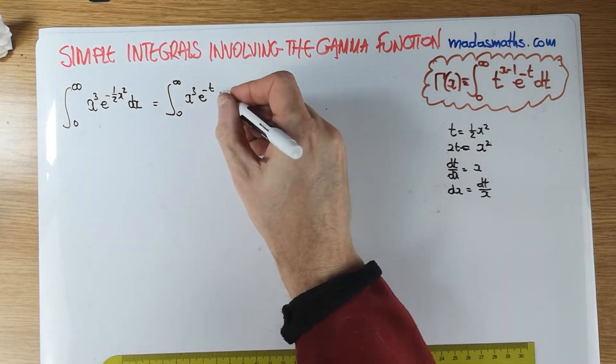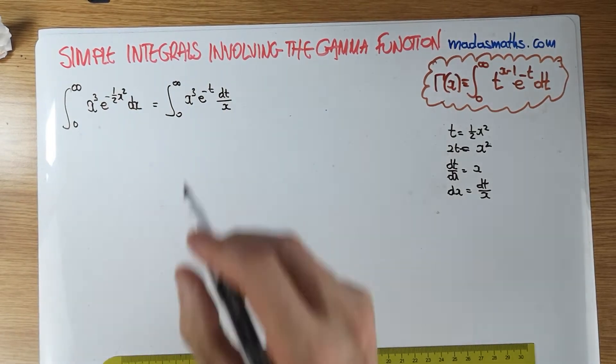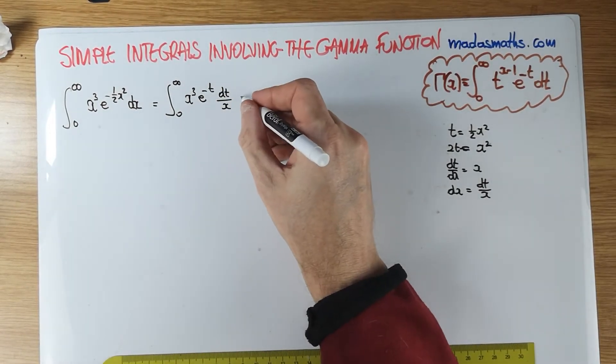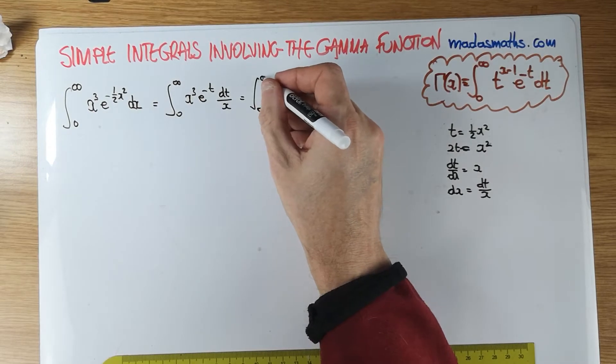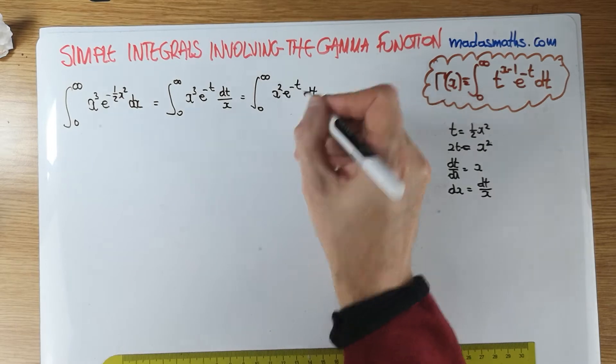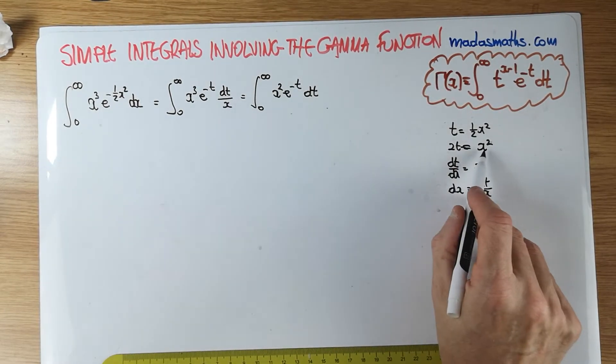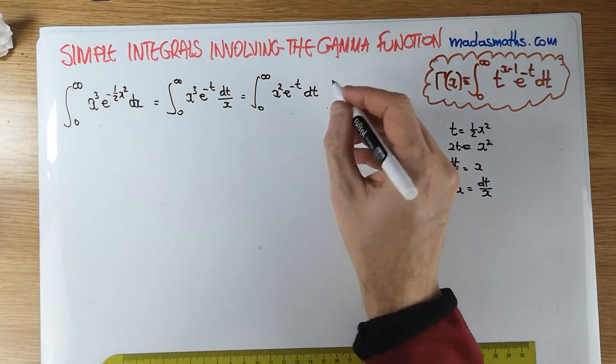So x cubed, let's leave him, e to the minus t, which was what we really wanted there, and the dx is a dt over x. And what happens there? Some of the x's will cancel. So first of all, 0 to infinity, x squared e to the minus t dt. We still need the integral to go dt, so at the moment we need to lose this x squared. That's easy to lose. x squared is simply 2t.